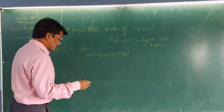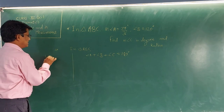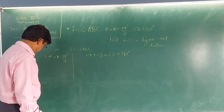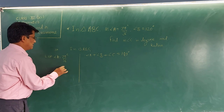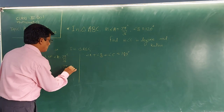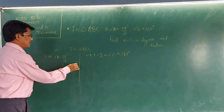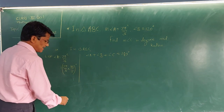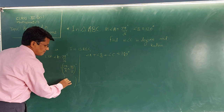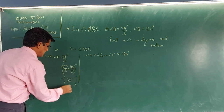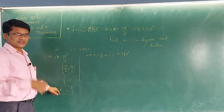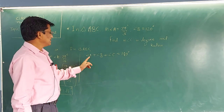Let angle A equal 7π/36 radian. To convert this angle from radian to degrees, multiply by 180/π. So we get 7π/36 × 180/π. The π cancels, and by simplifying we get 35 degrees. Hence angle A equals 35 degrees.